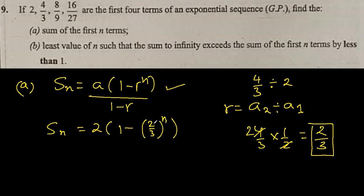So let's simplify this now. 2(1-(2/3)^n)/(1-2/3) equals...